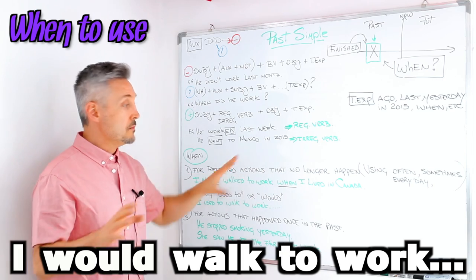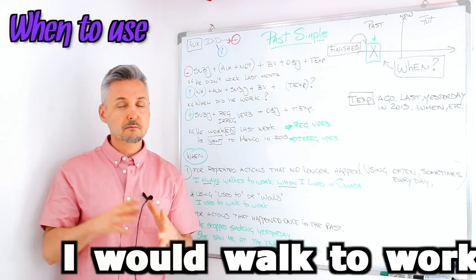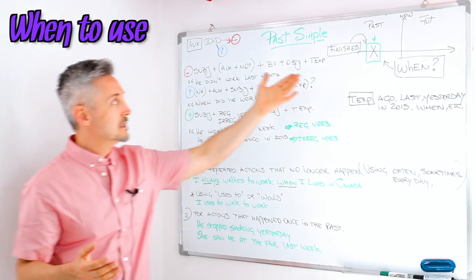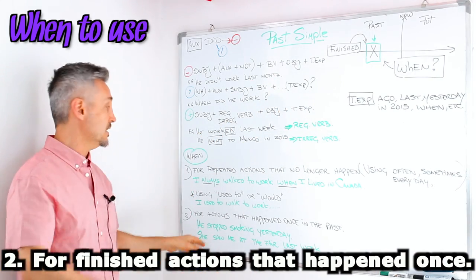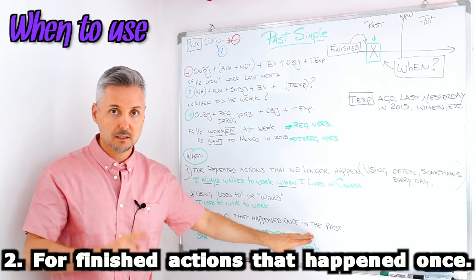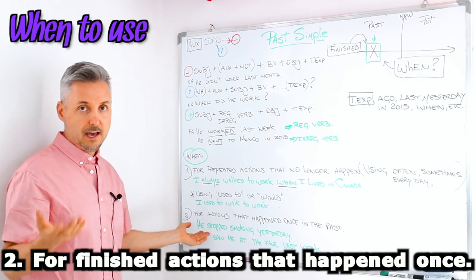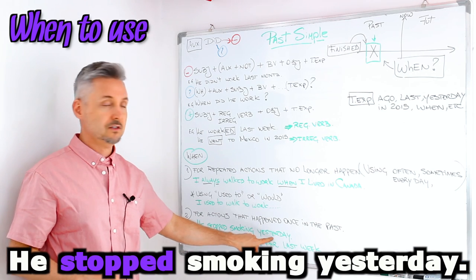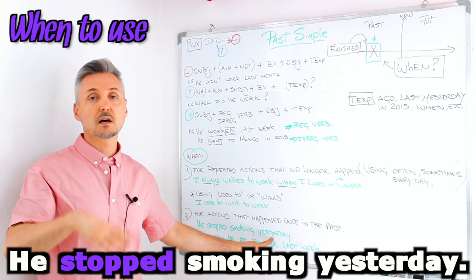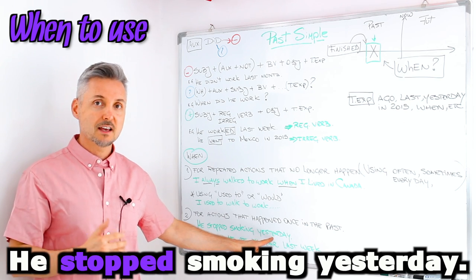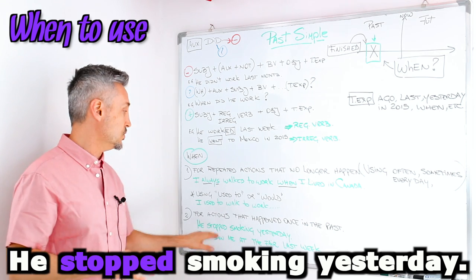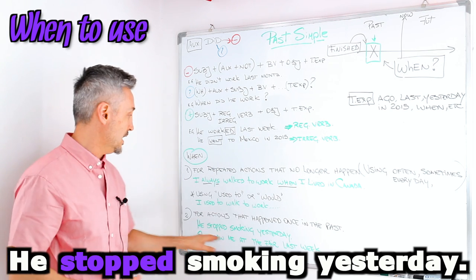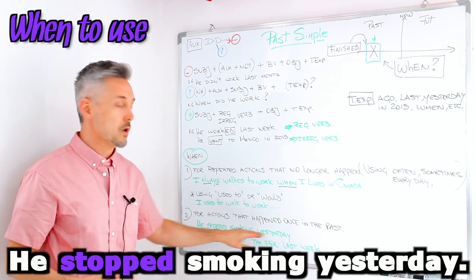Now this is the most difficult part of the simple past or the past simple. Like I said before, we use it for a finished action that happened only once in the past. So I have two examples. He stopped smoking yesterday. So in the past he smoked 25 cigarettes a day, but yesterday he decided to stop. So it's an action that he decided and he stopped smoking in this case. He stopped smoking yesterday.